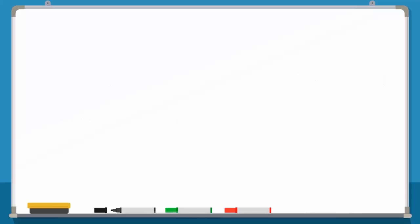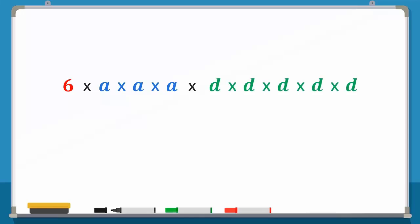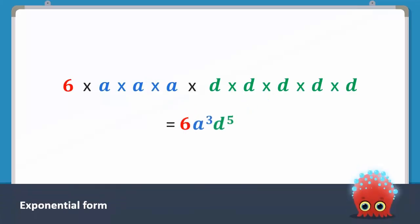So, 6 times a multiplied by itself 3 times, times d multiplied by itself 5 times, can be written as 6a to the power 3, d to the power 5. This term is in the exponential form. We can also call this the index notation.